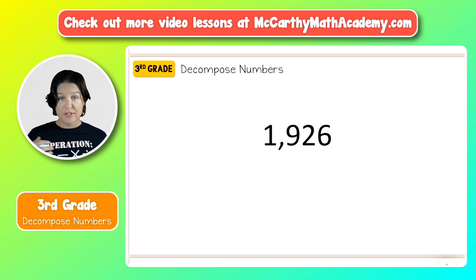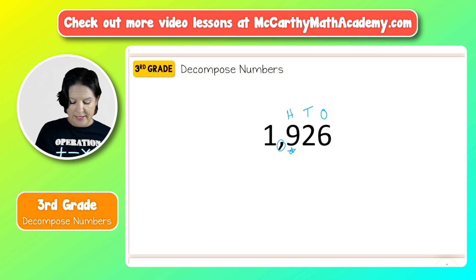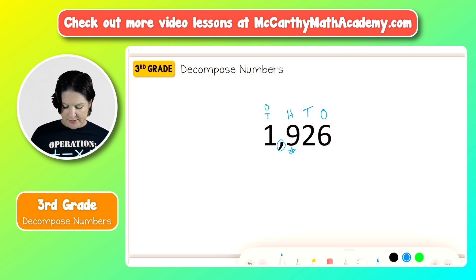Here we have the digits one, nine, two, and six. The first thing I like to do when decomposing numbers is to identify the place values of each digit. The six is in the ones place, the two is in the tens place, the nine is in the hundreds place, and this is the one thousands place. To read this number, we've got 1,926. This number is written in standard form.